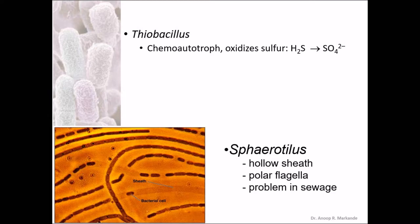Thiobacillus is a chemoautotroph which oxidizes sulfur from H2S to sulfuric acid. This organism is used for microbial influenced metal recovery, which helps humans in recovering metals from their ores without extra chemical wastage.